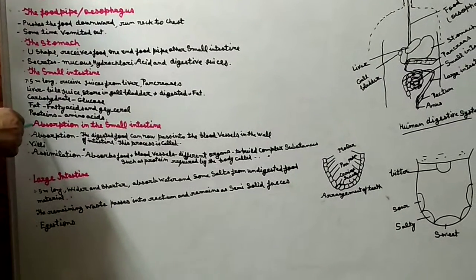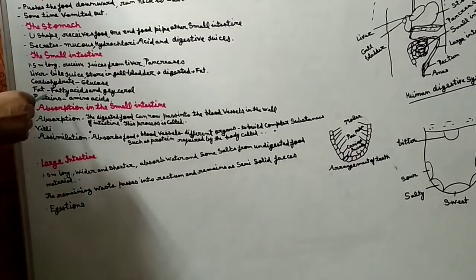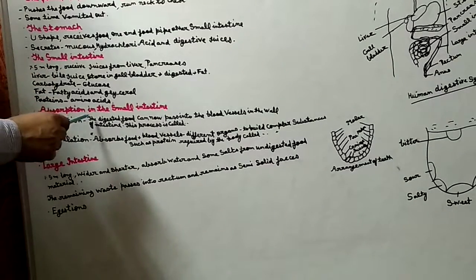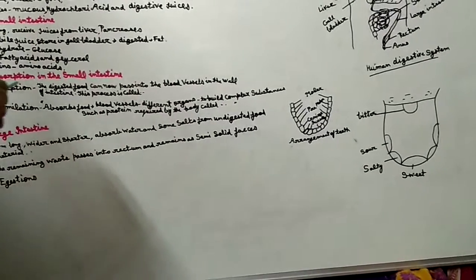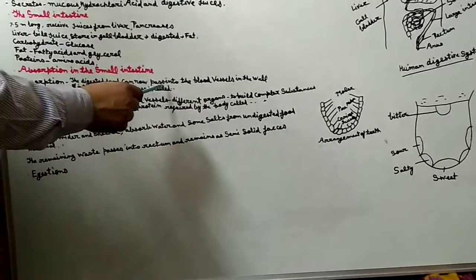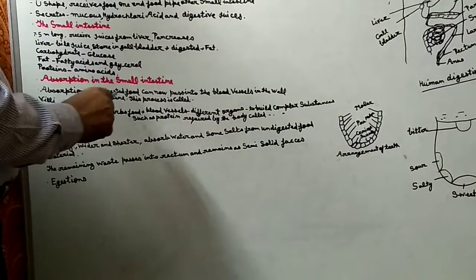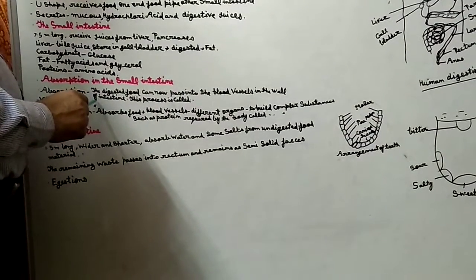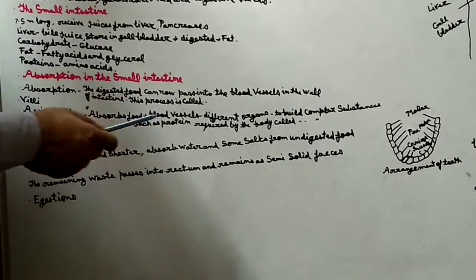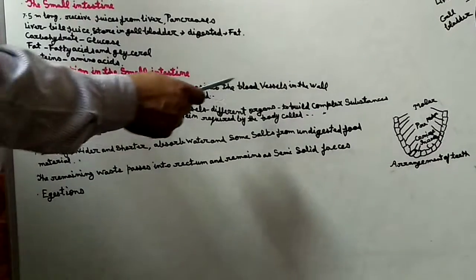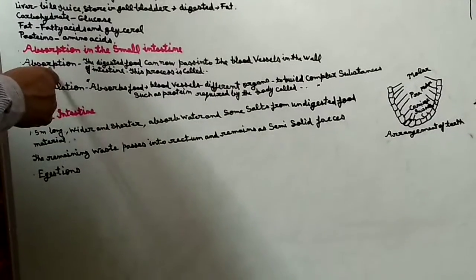Lower part tak digestion hone ke baad, absorption in the small intestine. Ab digestion ka kaam toh karti hai small intestine, aur absorption ka bhi - bhojan ko sokhne ka kaam bhi yahi karti hai. Absorption kya hai - digested food can now pass into the blood vessels, in the wall of the intestine. This process is called absorption. Jo digested food hai, wo blood vessels mein chala jaata hai, aur iss process ka naam absorption hai.